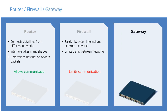A default gateway is a network node, specifically a router, that is assumed to know how to forward packets onto other networks. A network device, such as a host NIC, may have a default gateway defined, in which case all packets with a destination IP address that doesn't match the network address of the NIC are sent to the default gateway for further routing to the intended destinations.